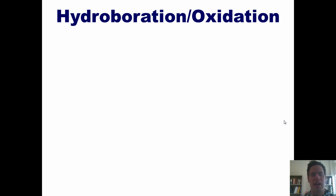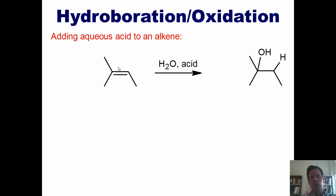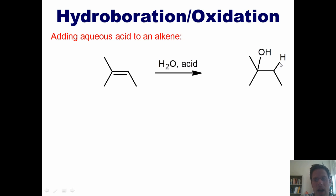Our next reaction is hydroboration oxidation. You might remember from earlier in this lecture that if you take an alkene and stir it with water in the presence of catalytic acid, you'll end up placing an OH on the more substituted carbon — the internal one. The reason is that it traverses an intermediate with a more stable carbocation, according to Markovnikov's rule. So what if I really want my OH to be on the other carbon? Is there anything I can do?